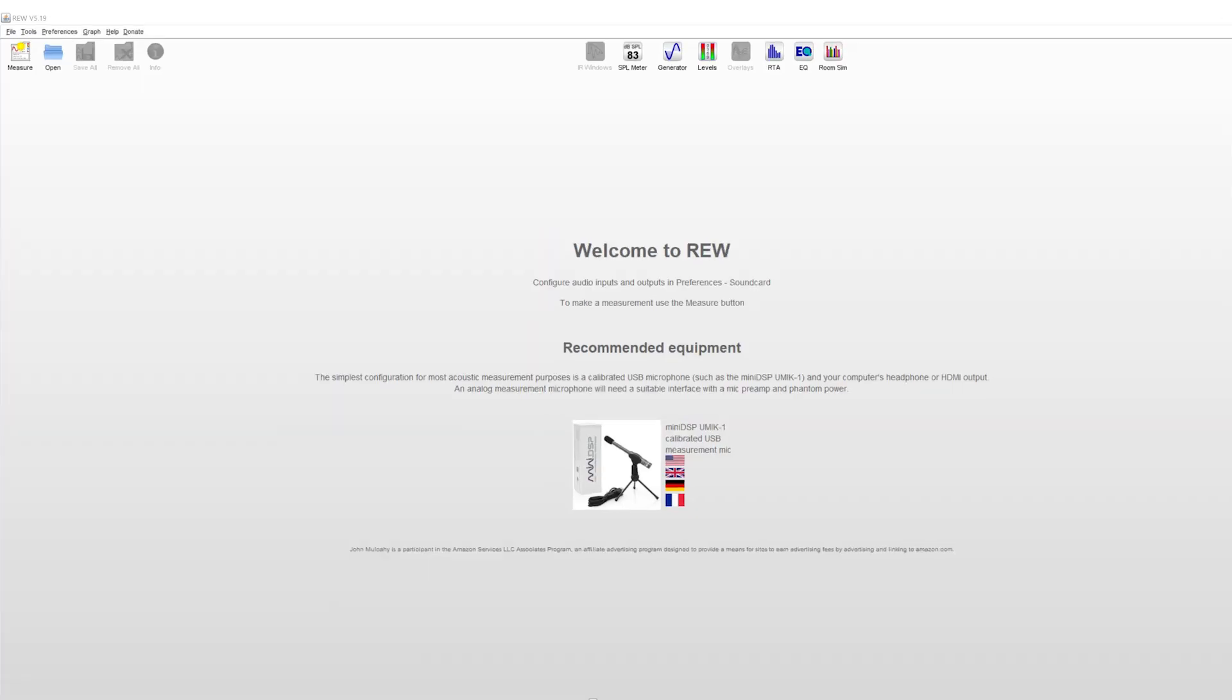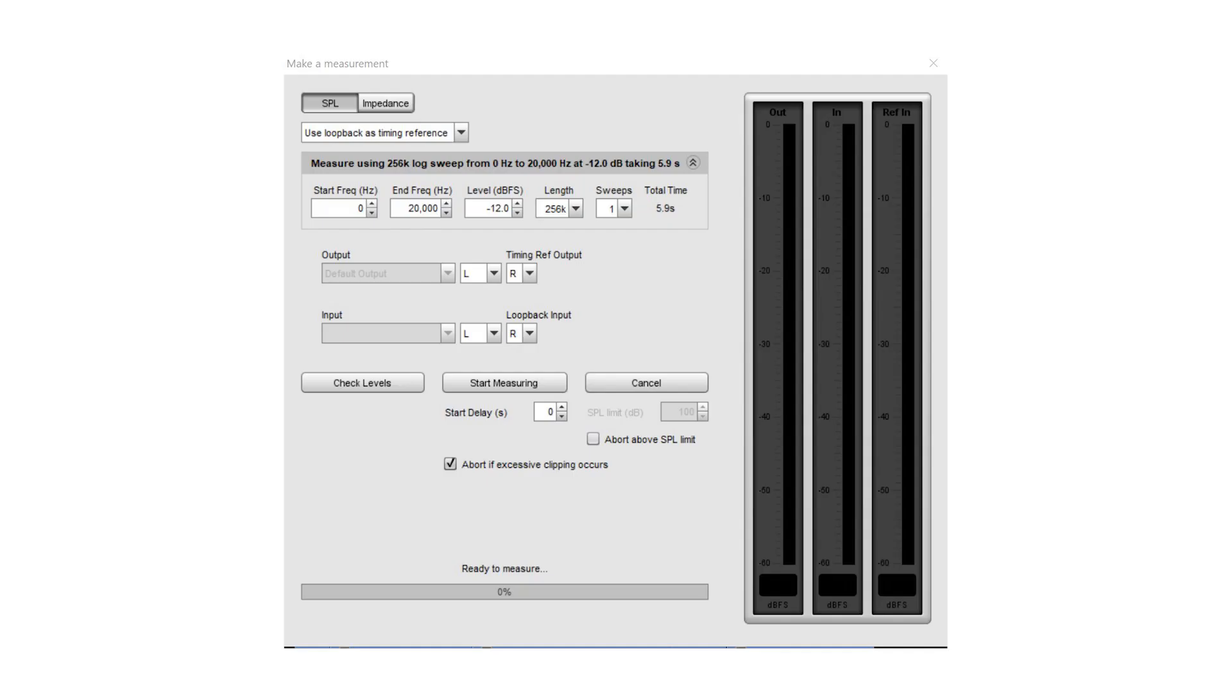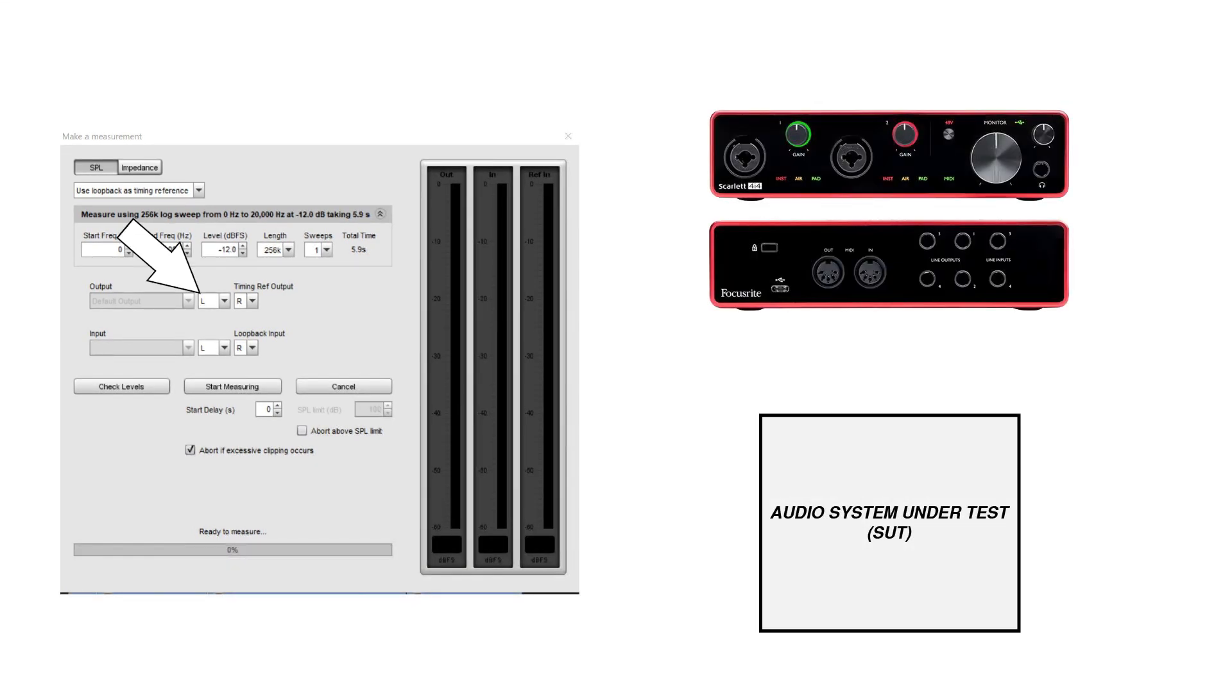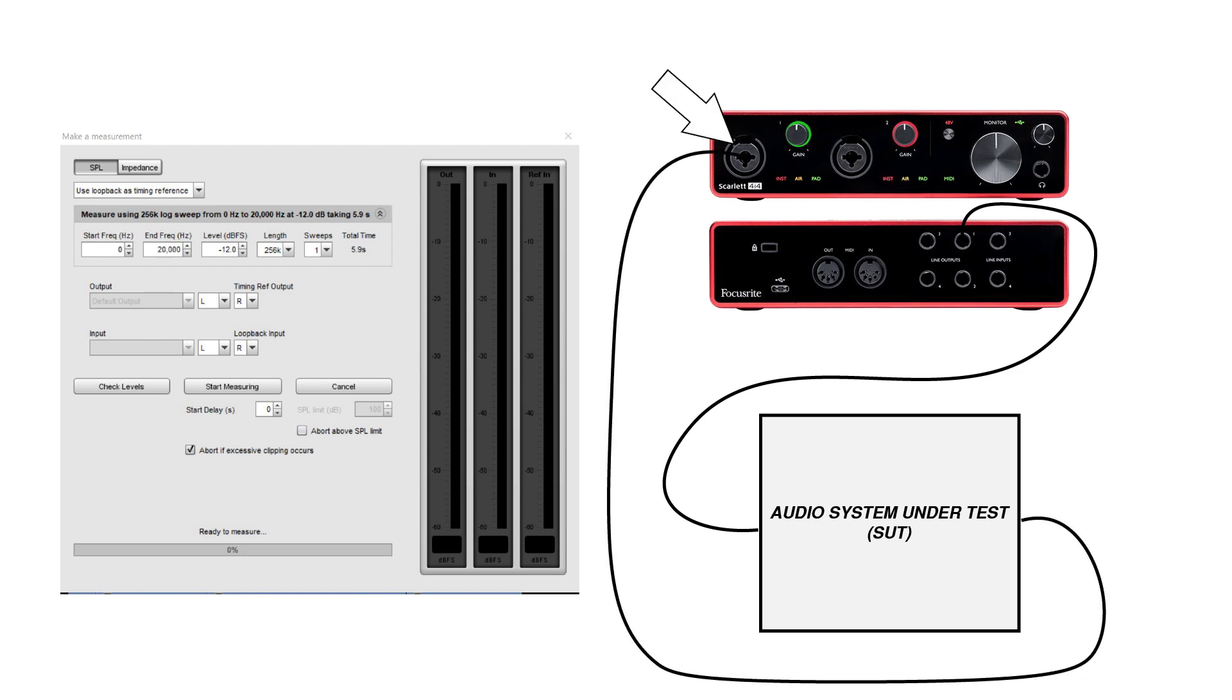To set up a basic measurement, I'll start by opening Room EQ Wizard. In the top left corner, click Measure. This window will pop up. You can see that the software will test the audio system by sending a frequency sweep signal. This will test how the system responds to each frequency along that sweep. Let's set up the inputs and outputs. I want the test signal to play through output 1, or the left output, of my audio interface. That's the output that I'll connect to the input of the system I'm testing. I'll connect the output of the system I'm testing to input 1 on my audio interface. Select input 1 as the input in the REW software.